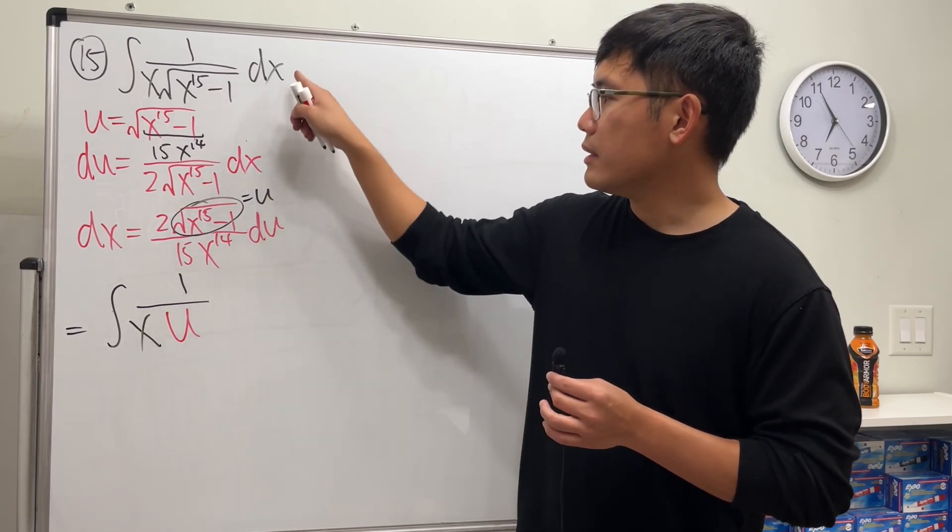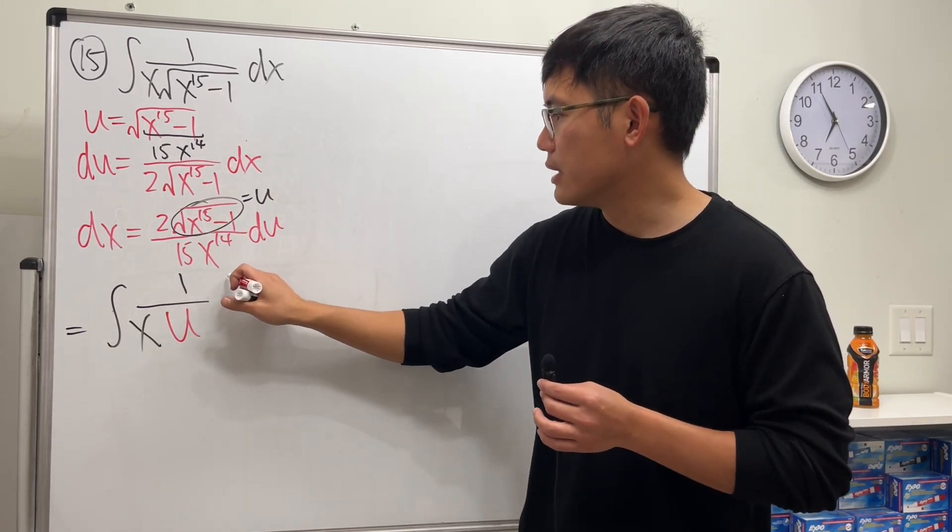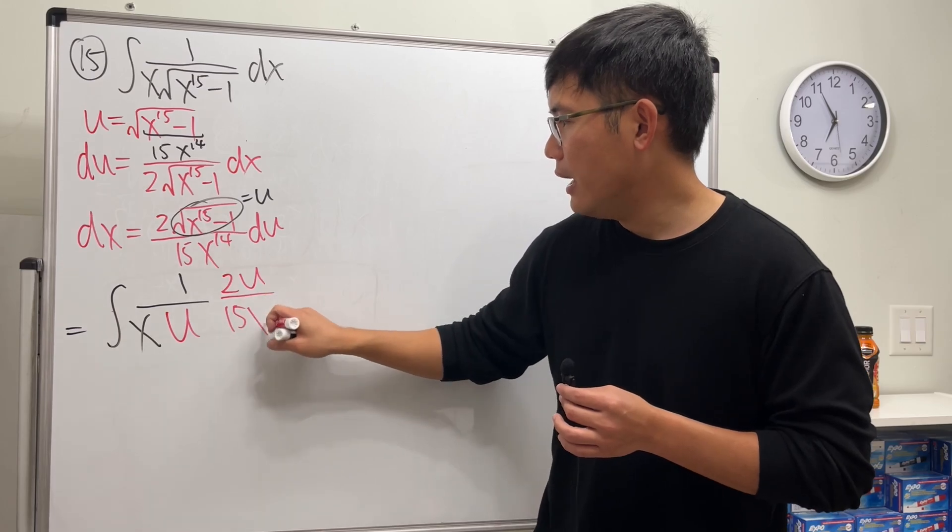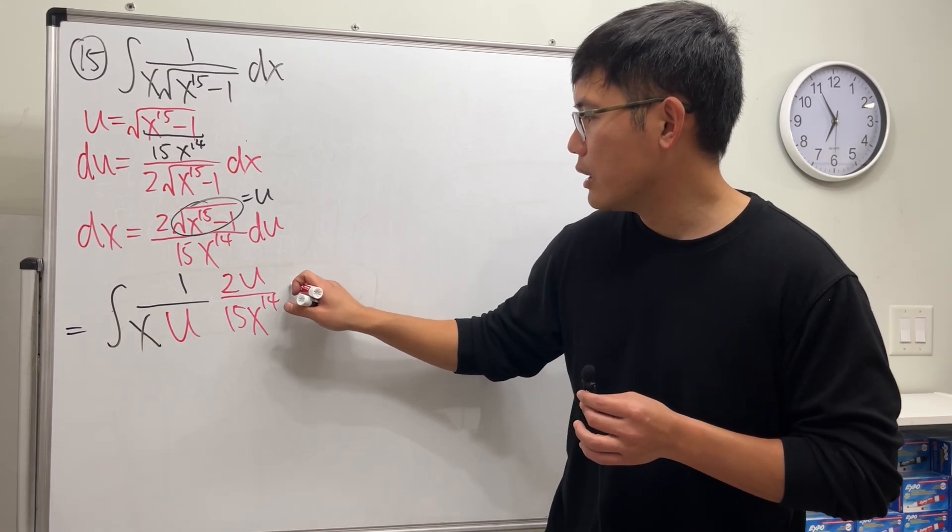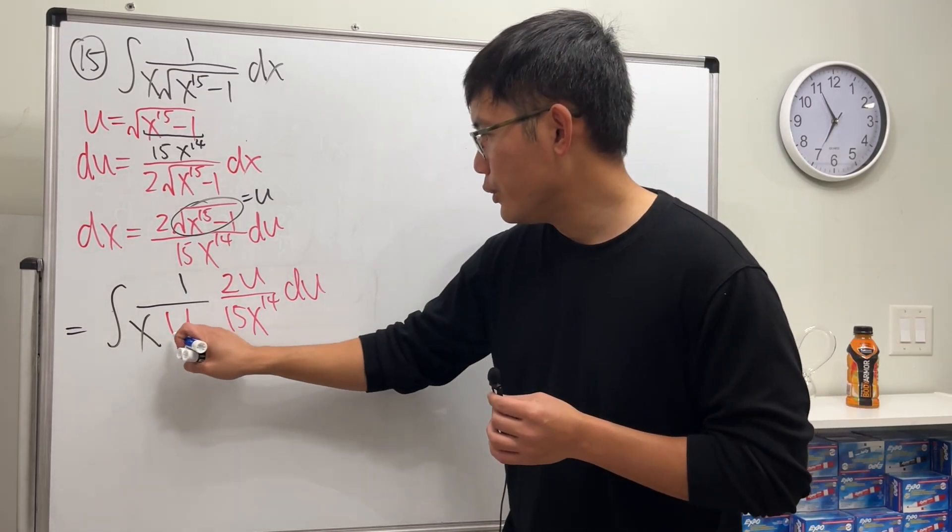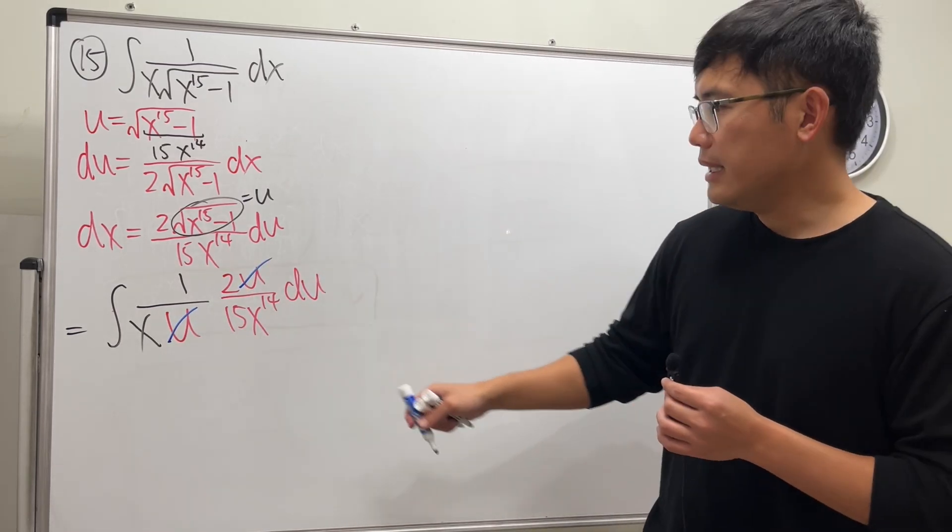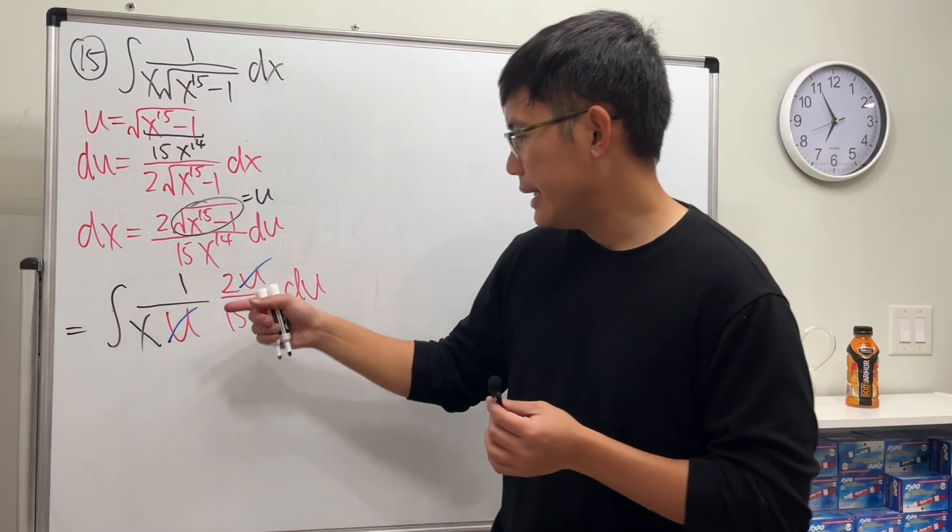We are going to get the integral 1 over x, this part is just our u, so that's good. And then dx is all that, I'll write yes, 2u over 15x to the 14th power in the u world.